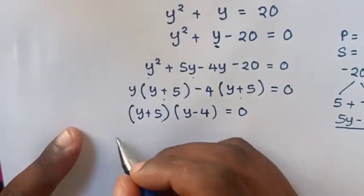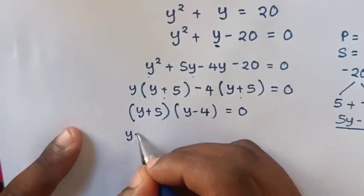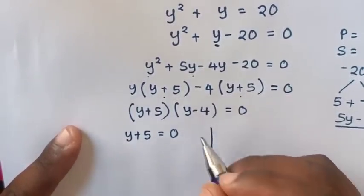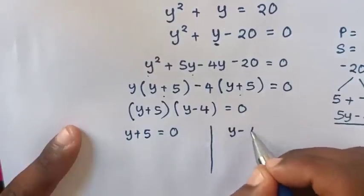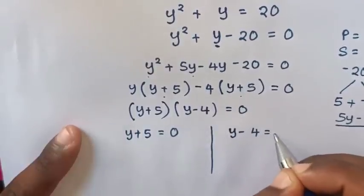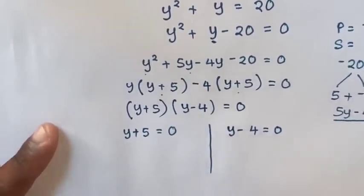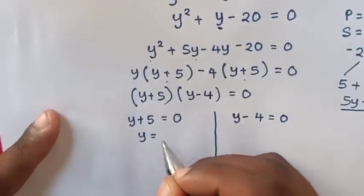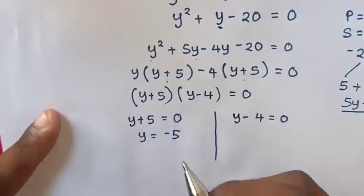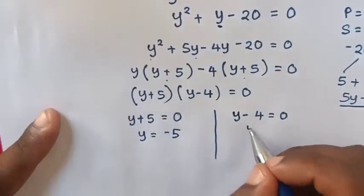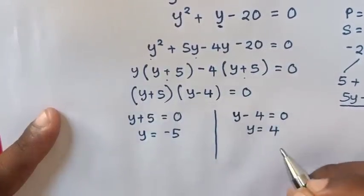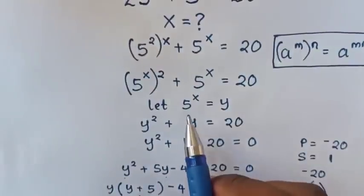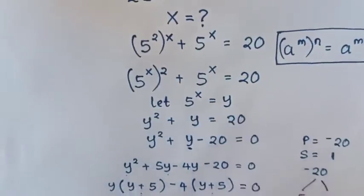We now have two cases: y plus 5 equals 0, and y minus 4 equals 0. In the first case, we take 5 to the right side, giving y equals negative 5. In the second case, we take negative 4 to the right side, giving y equals 4. But recall that we let 5 power x equal to y.